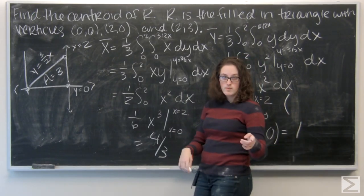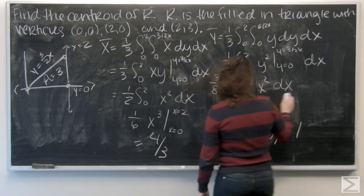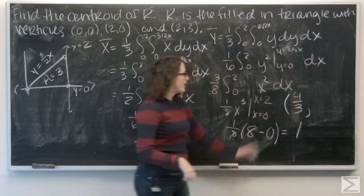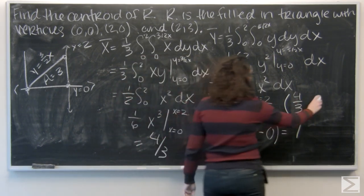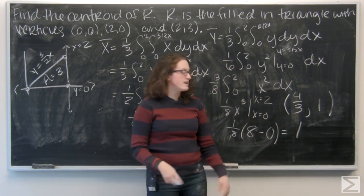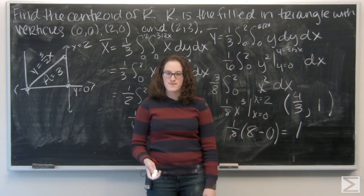I have my x, 4 thirds. And, my y, 1. So, the centroid of this region lies at 4 thirds, 1. And, that's our answer.